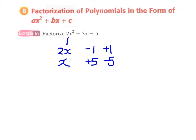of four pairs of factors. The first one will be 2x times x with -1 and +5 here.